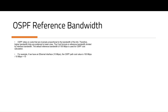Higher bandwidth links are more preferred traffic paths. Higher bandwidth will be preferred over lower bandwidth. The cost is calculated as reference bandwidth divided by the interface bandwidth, and that is how we decide the cost.